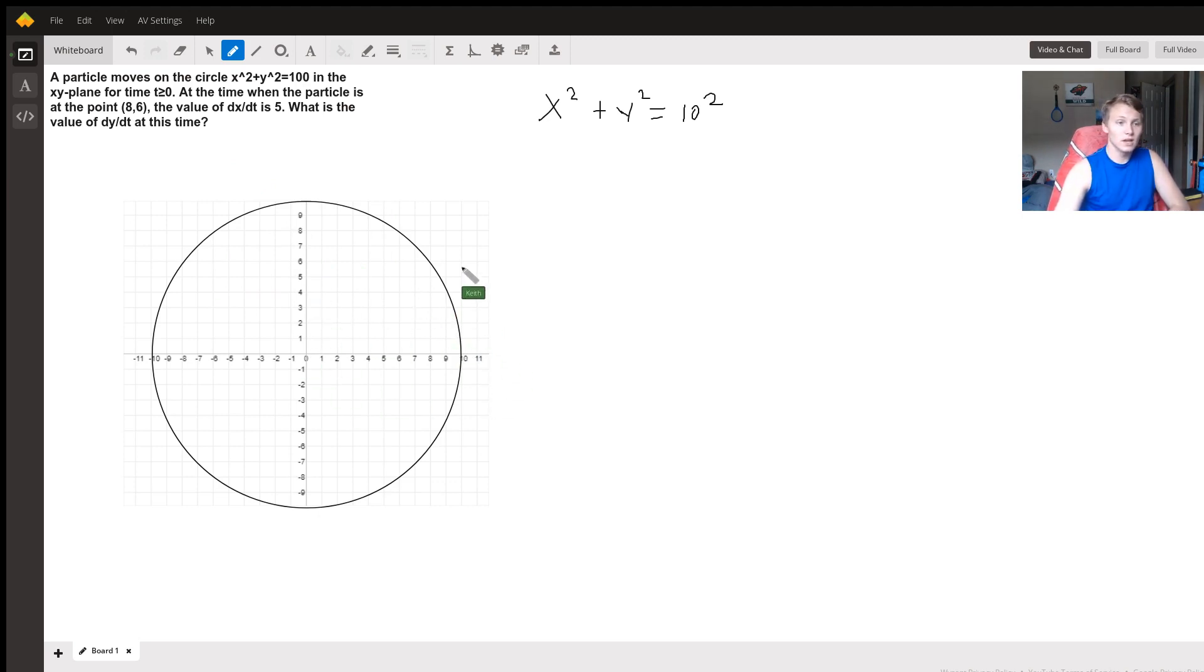So here I've graphed out a circle that fits this equation. The circle is centered at (0, 0) since there are no terms with either the x or y's, and the radius is 10. And so I'm going to now plot this point (8, 6) on the circle just so we have an idea of what this looks like. So (8, 6) is right here.